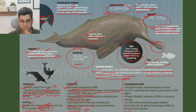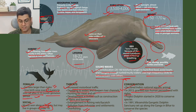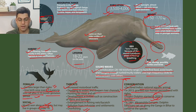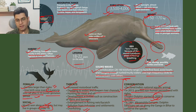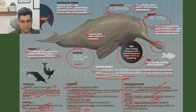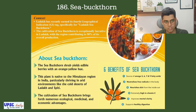Conservation efforts: it was declared India's national aquatic animal in 2013 and granted non-human personhood with rights. Project Dolphin was started in 2020 to conserve the species. In 1991, the Vikramshila Gangetic Dolphin Sanctuary was set up along the Ganga in Bihar to conserve the Ganga River Dolphin.